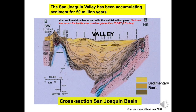Geologists call this display a cross section. It represents what you might see if you cut the San Joaquin basin in half. The youngest sedimentary rocks are colored yellow and tan, while the oldest are brown. The basin bottom or basement rock is pink. As more sediment was shed into the basin, the more the basin sunk, accommodating the load. We don't know exactly how much sediment has filled the basin, but in places it is more than five miles thick. Note that the horizontal scale is compressed about 10 times greater than the vertical scale.